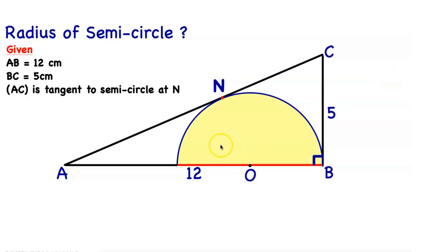Hi all, it's Super Easy Math. In this video we're going to find the radius of the semicircle given that AB equals 12 centimeters, BC equals 5 centimeters, and AC is tangent to the semicircle at N. Also we have a 90-degree angle here. Give it a try if you want, and now let's go ahead into the solution. Don't forget to like and subscribe.